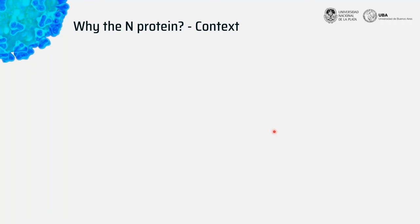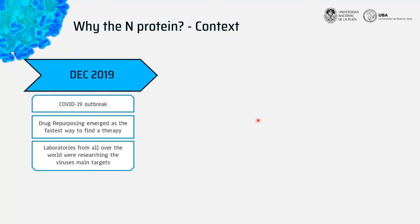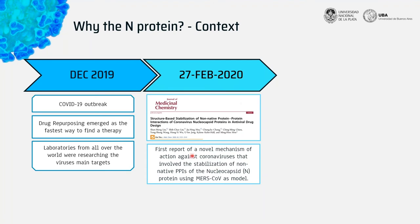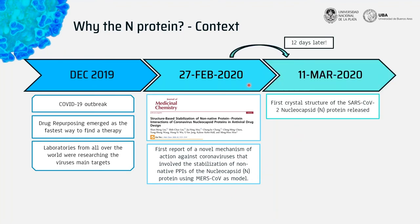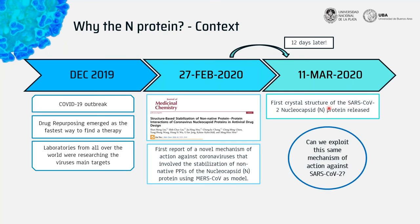Let me set the context for why we chose the N protein as a drug target against coronavirus. On December 2019 the COVID-19 outbreak happened, and drug repurposing emerged as the fastest way to find a therapy, with many groups around the world targeting the same viral drug targets. An article published in the Journal of Medicine and Chemistry reported a novel mechanism of action involving stabilization of non-native protein-protein interactions of the nucleocapsid protein, using MERS coronavirus as a model. Shortly after, the first crystal structure of the SARS-CoV-2 nucleocapsid protein was released, and we wondered if we could exploit the same mechanism against SARS-CoV-2.